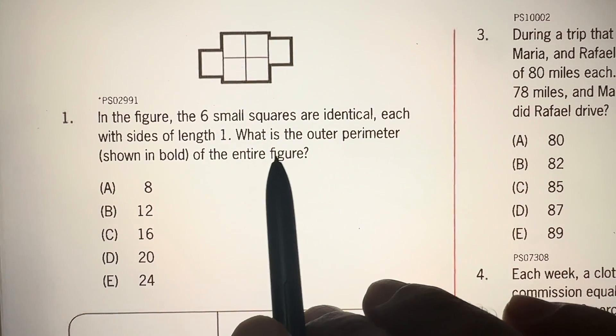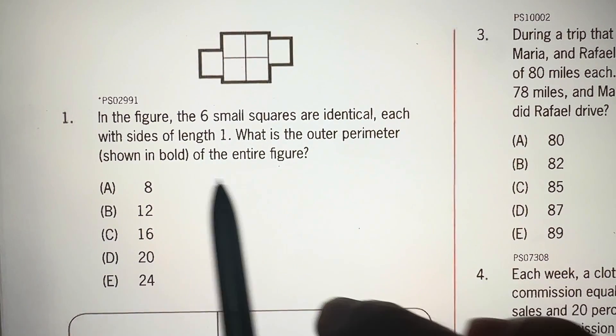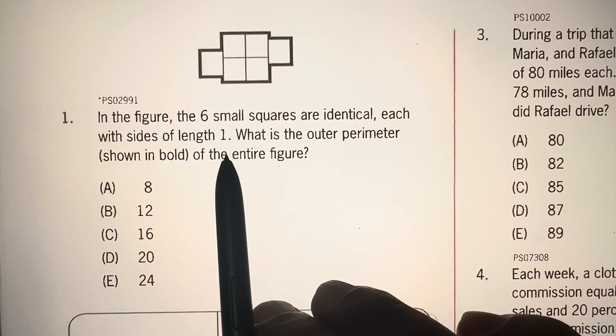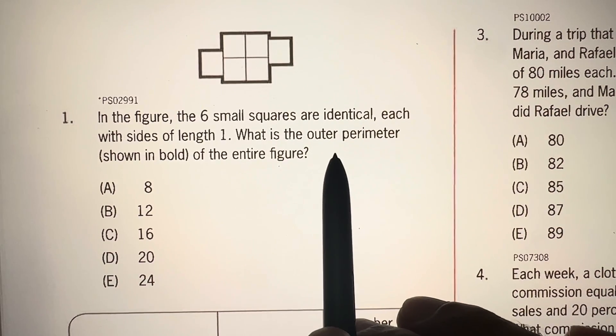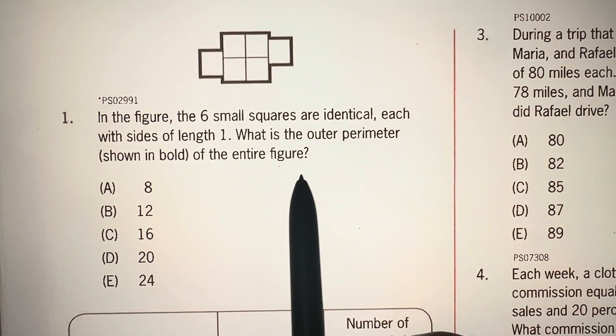In the figure, the six small squares are identical, each with sides of length 1. What is the outer perimeter shown in bold of the entire figure?